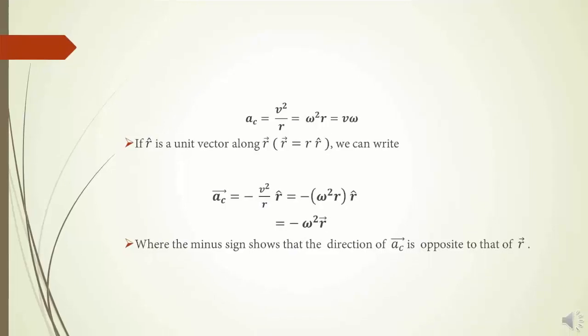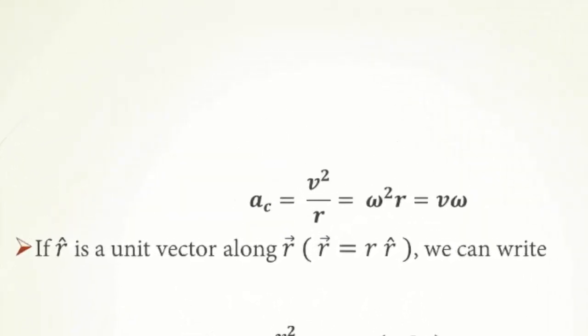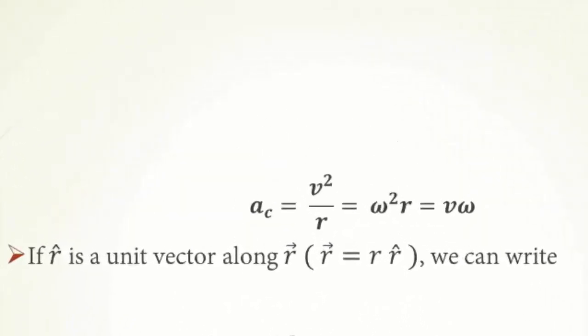The formula for centripetal acceleration is given as V square upon R or Omega square R or Omega times V, where Omega is the angular velocity of the particle.